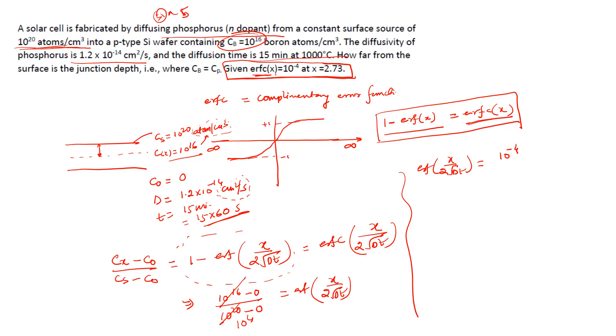Error function complementary of some value x, if you assume, so here x will be this complete term x/(2√Dt) = 10⁻⁴, then x = 2.73. That means x/(2√Dt) will be equal to 2.73. So you can find this x.